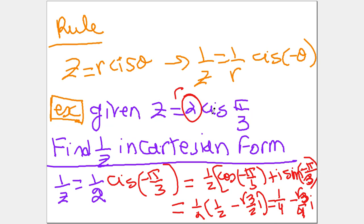Let's apply this with an example. If z equals 2 cis(π/3), find 1/z in Cartesian form. Method 1: directly use the formula. 1/z = (1/2) cis(−π/3). Expanding: cis(−π/3) = cos(−π/3) + i sin(−π/3). Cosine is even so cos(−π/3) = cos(π/3) = 1/2. And sin(−π/3) = −sin(π/3) = −√3/2. So the result is 1/4 − (√3/4)i.